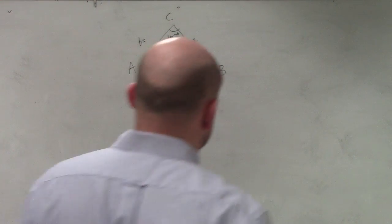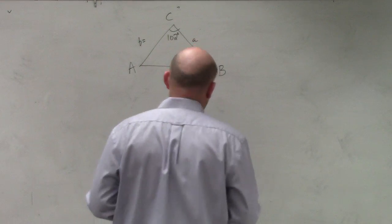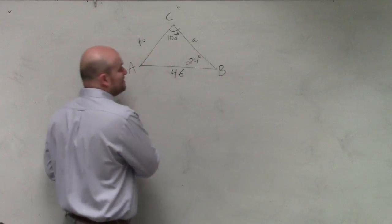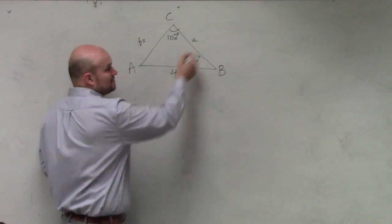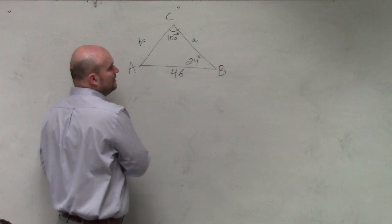What we're asked to do in this case is to find the missing lengths. I'll find missing parts of the triangle. So we have missing lengths at A and B, all right?